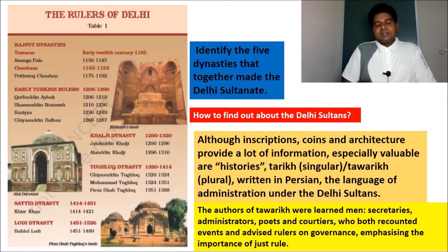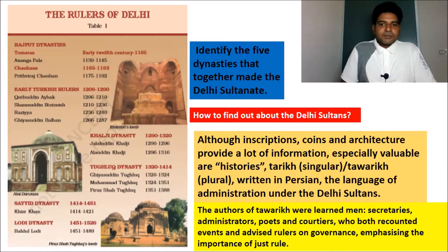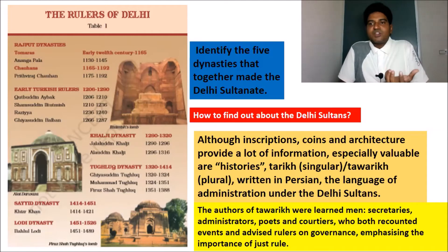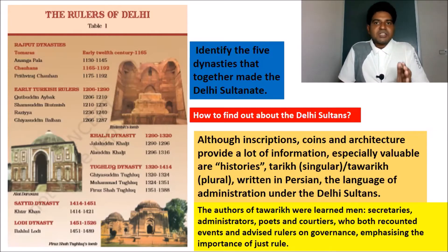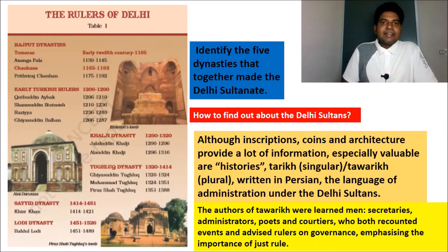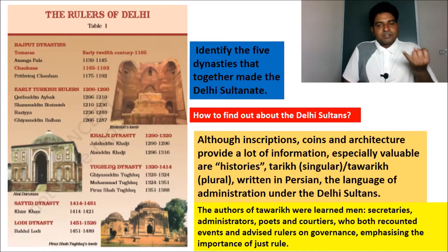There are also some special and valuable resources which tell us about the histories of Delhi Sultans. They are called 'Tarik' in singular and 'Thawariks' in plural. These are writings written in Persian language, the language of administration under the Delhi Sultans. During the Delhi Sultans' rule, the administrative language was Persian, which is why these histories were written in Persian.